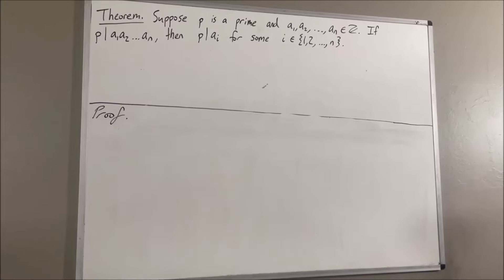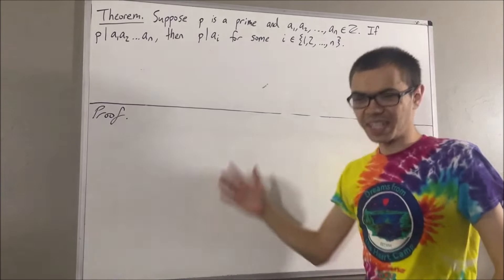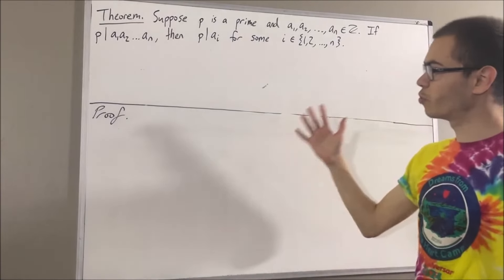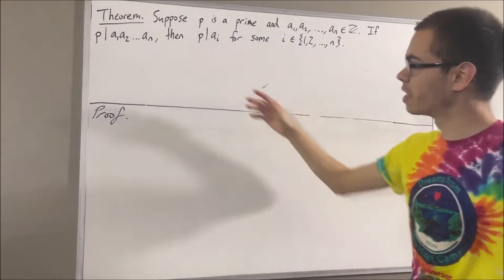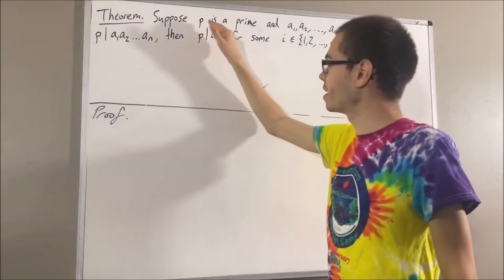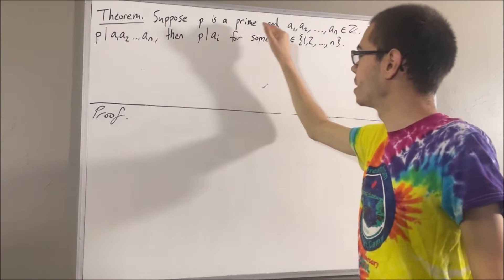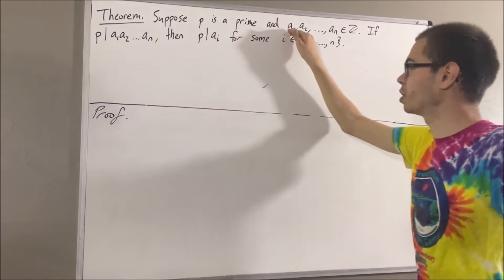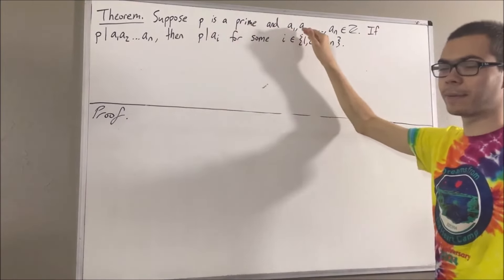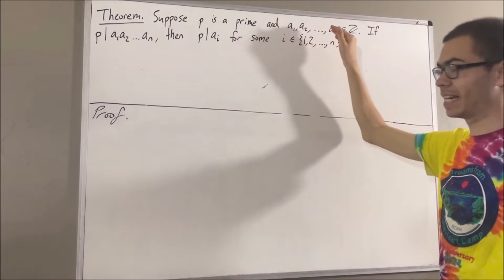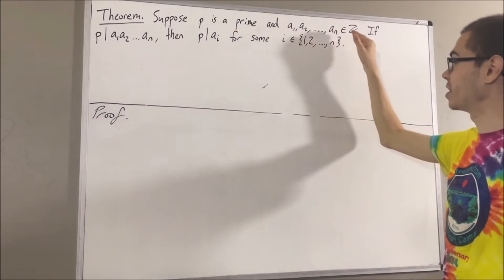Hello! In this video, we are going to prove the following theorem. Suppose p is a prime number, and a1, a2, ..., an is a list of integers.